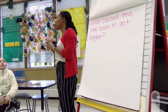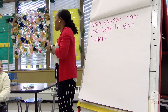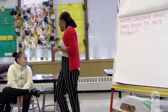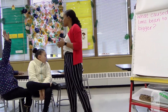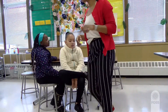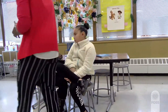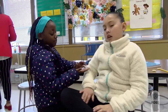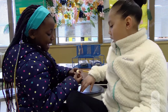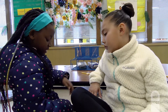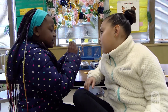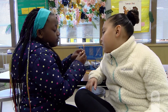Teacher: What caused the lima bean to get bigger? Go ahead and talk with your group. Students respond: The water made it bigger because the seeds, when they get big, they almost crack. But it's missing wet things, so it doesn't grow that big. It's missing the nutrients of the soil.